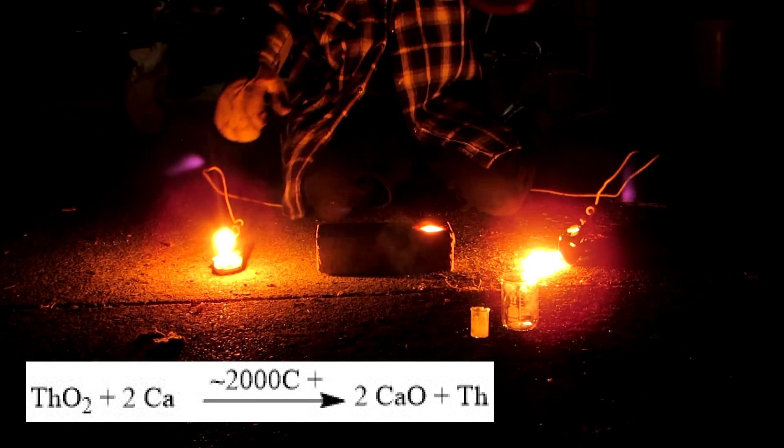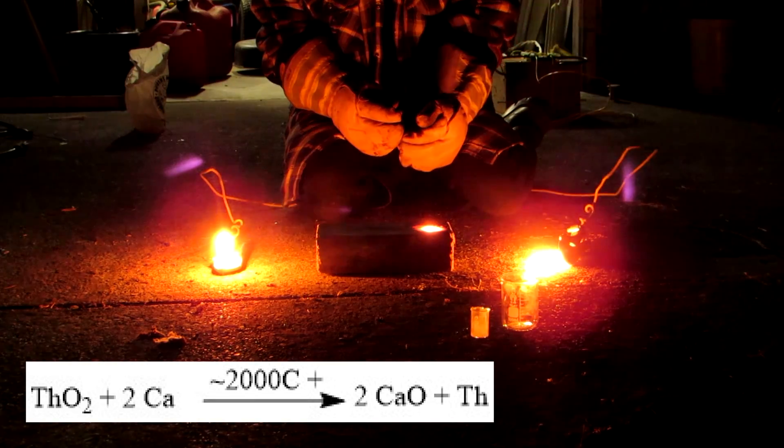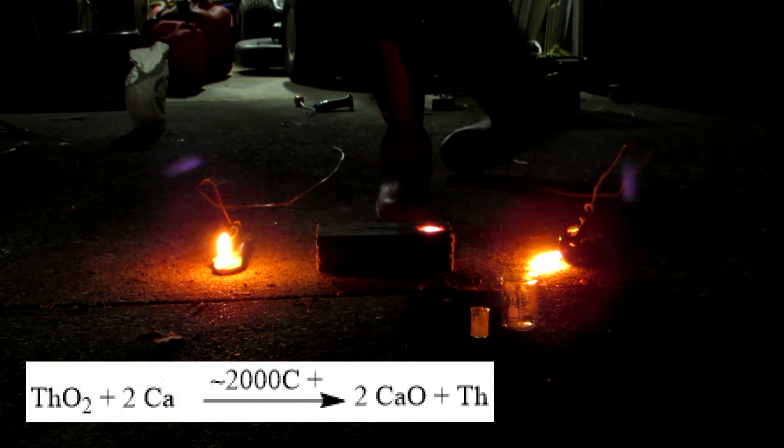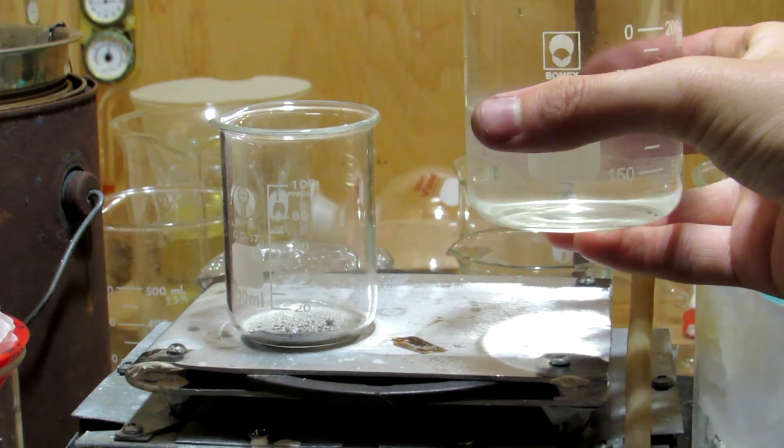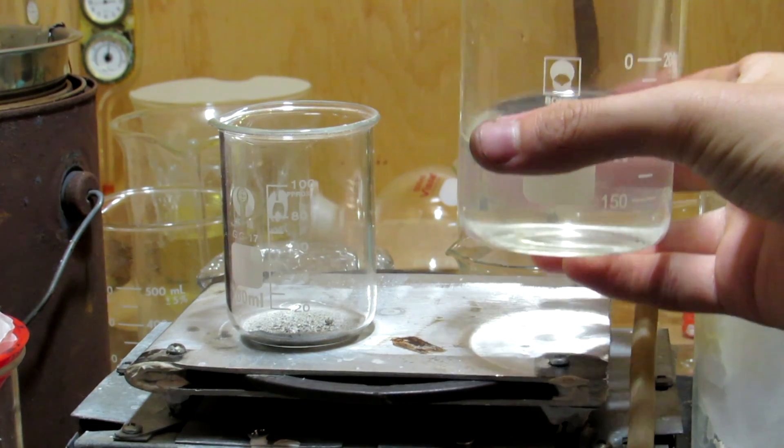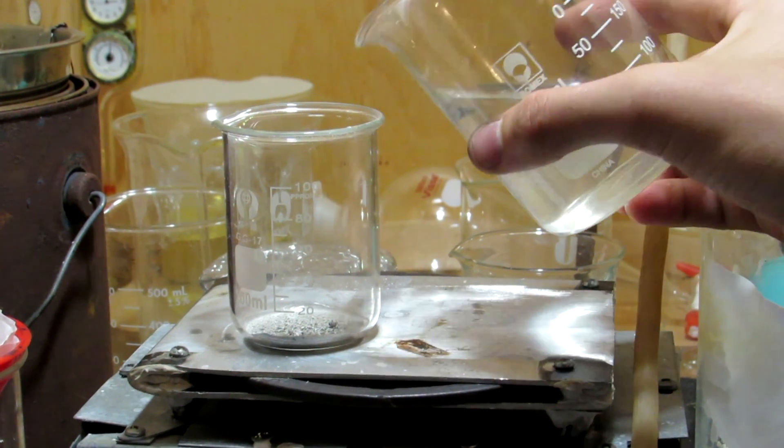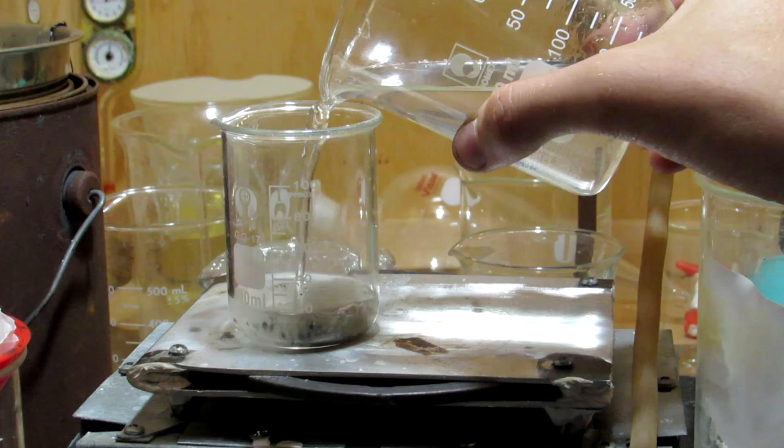After heating the mixture to several thousand degrees Celsius for a minute or so, the product was allowed to cool and then scraped into a beaker. A solution of 20 grams of sodium hydroxide in 100 milliliters of water is then added to the mixture to dissolve residual calcium metal, sodium oxide, and calcium oxide.